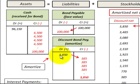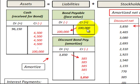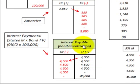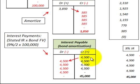The debit balance of $3,850 balances with the $96,150 debit and the $100,000 credit balance. Looking at our interest payable, those are semi-annual interest payments on the bond, based on 9% — or 4.5% per period — times the $100,000 face value.